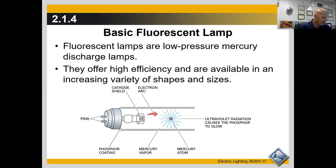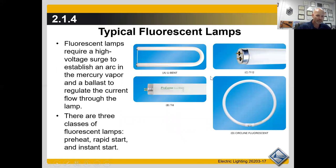Fluorescent bulbs are made in straight, U-bend, circular, and compact varieties. They are designated by the letter T followed by the diameter in eighths of an inch, ranging from T5 to T17 in the United States. Straight fluorescent lamps range from six inches up to eight feet in length. Higher wattages go with longer bulbs — for example, a 20-watt T12 tube is shorter than a 40-watt T12 tube.